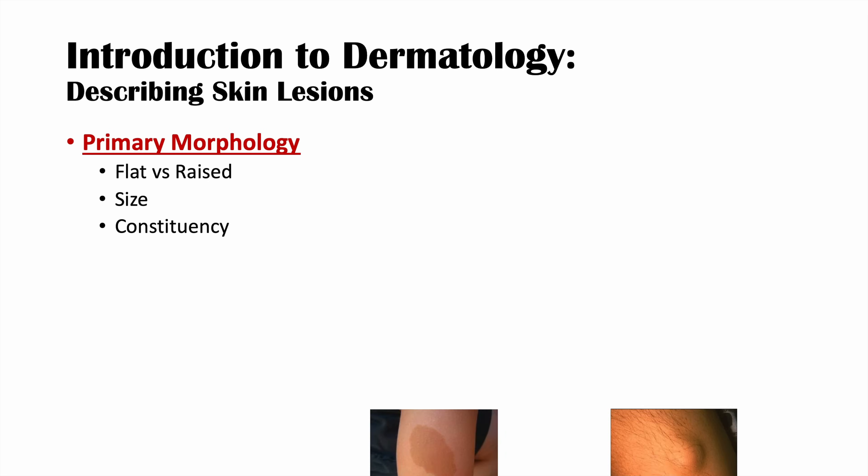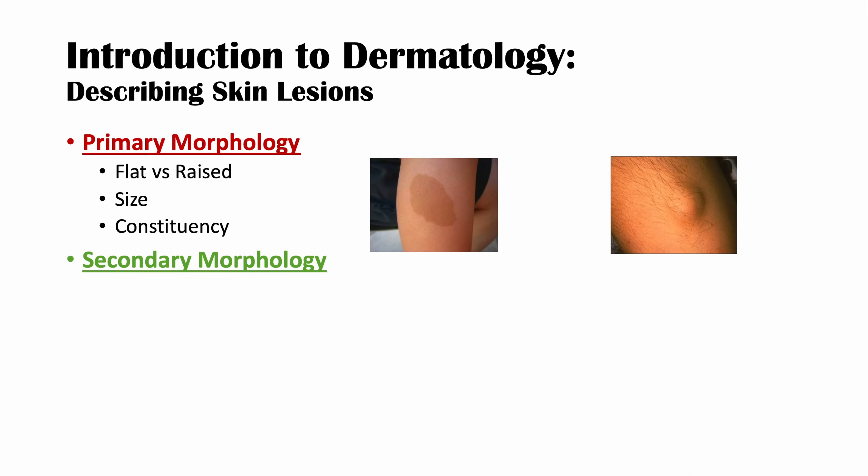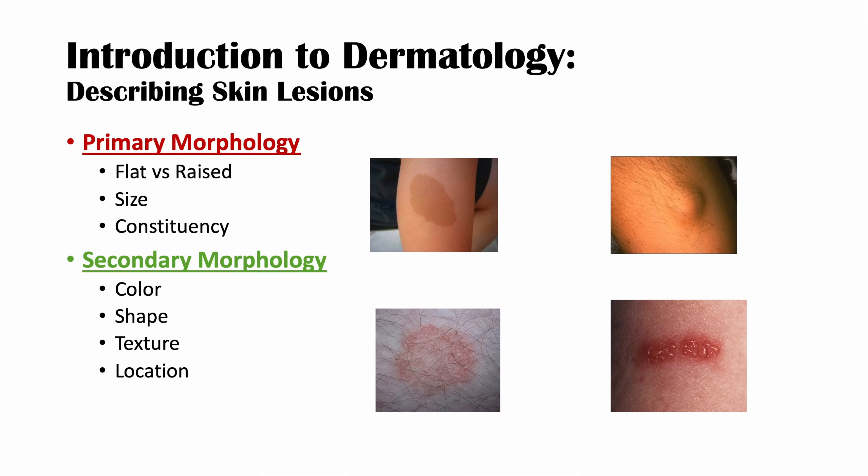This lesson is an introduction to dermatology. We're going to talk about how we describe skin lesions and some of the more common ones. The outline covers primary morphology, including flat versus raised, size, and constituency of skin lesions, and secondary morphology, which includes color, shape, texture, and location.